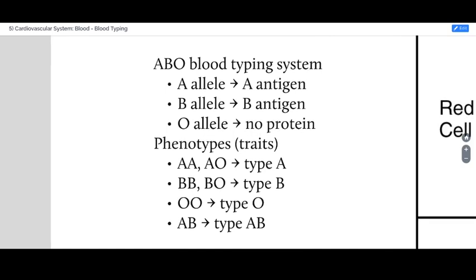There are two aspects to blood typing. The first one is called the ABO blood typing system. It's based on a single gene family called ABO which has three variants or alleles. The A allele is a gene that provides instructions to make a protein called the A antigen. The B allele is instructions to make a protein called the B antigen. And the O allele is a version of the gene that does not successfully make any protein. What's happening here is one of the more involved aspects of heredity called co-dominance.